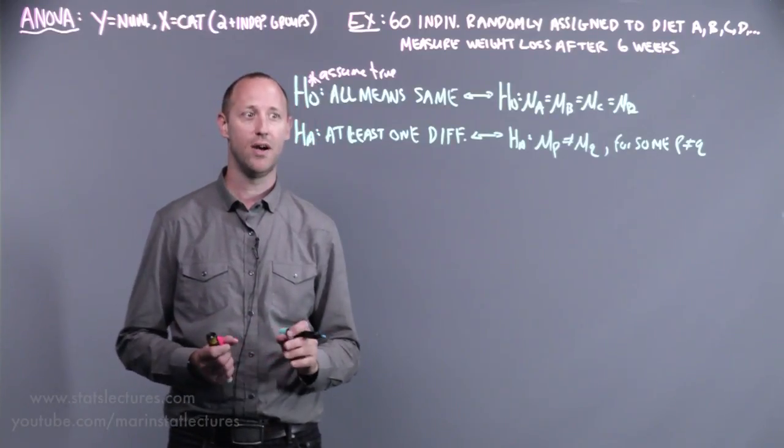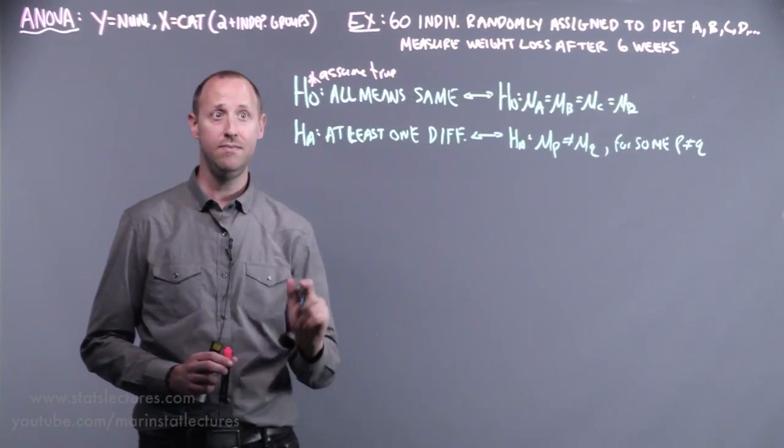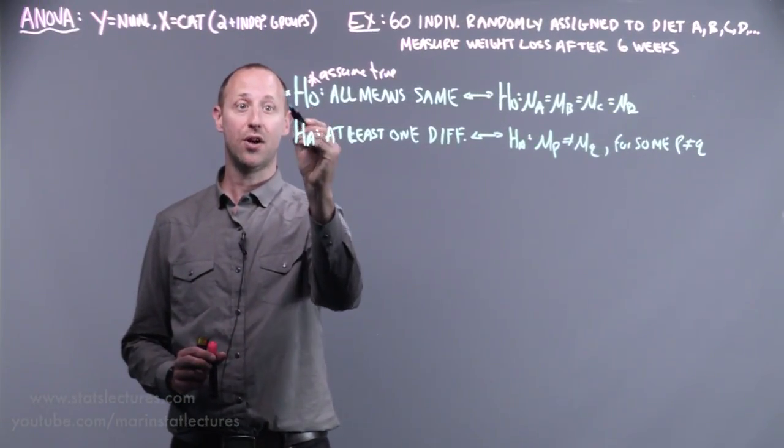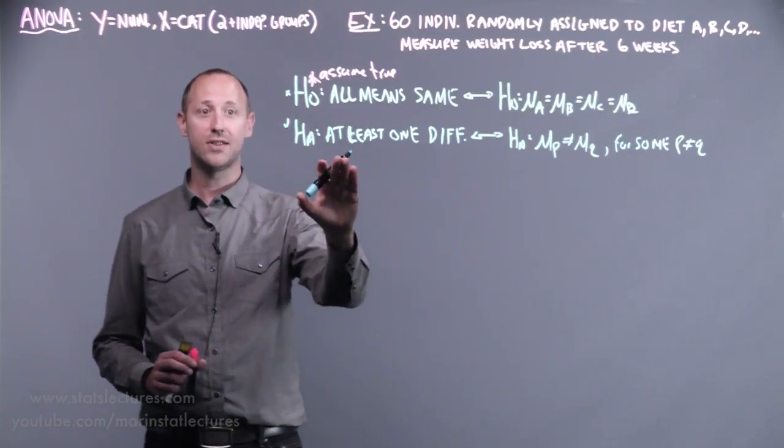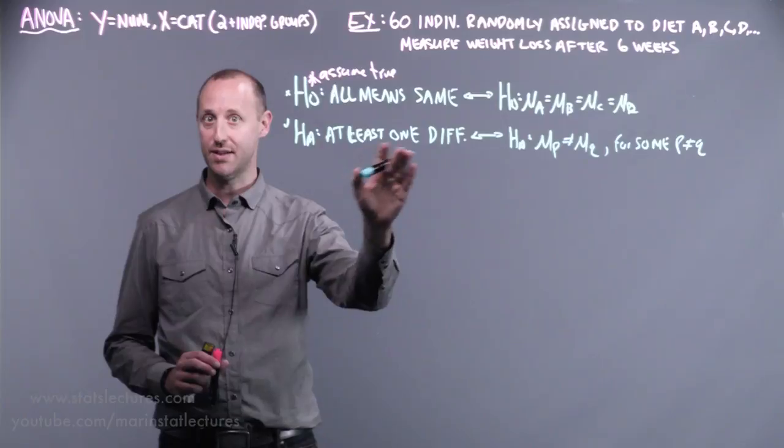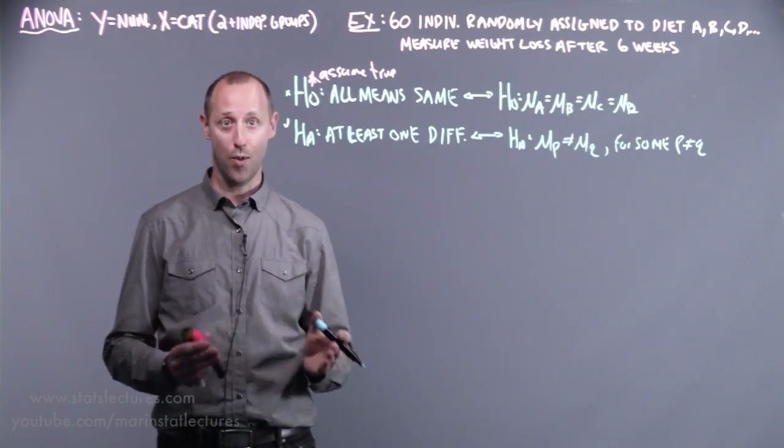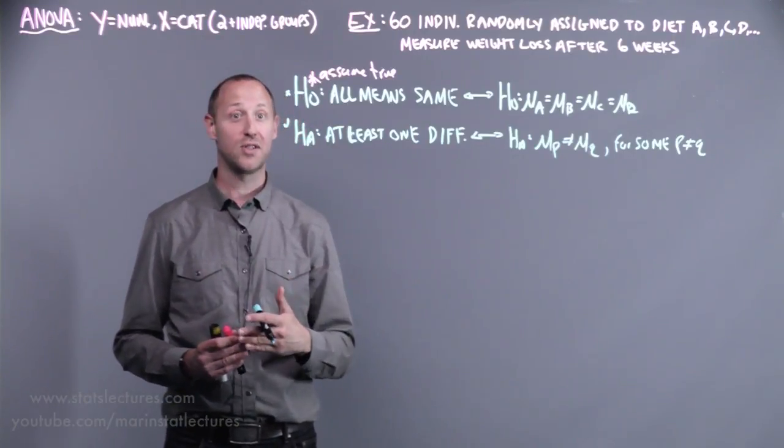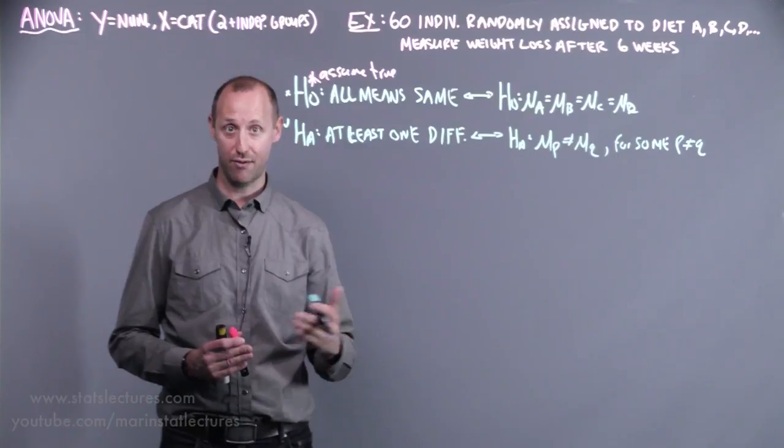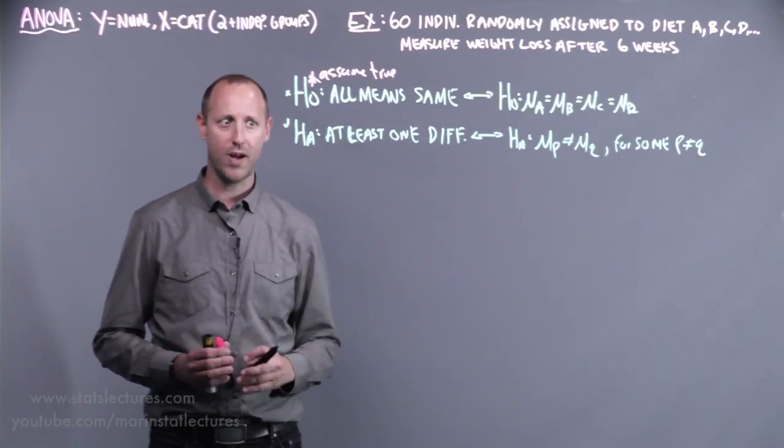I like to think of ANOVA as being a screening test. If we end up rejecting our null and saying we have evidence to believe the alternative is true, that just tells us that at least one diet is different from the others, or at least one mean is different from the rest. It doesn't tell us if more than one differ or which ones differ. At that point, we'll go in and start to try and decide which diets differ from each other.